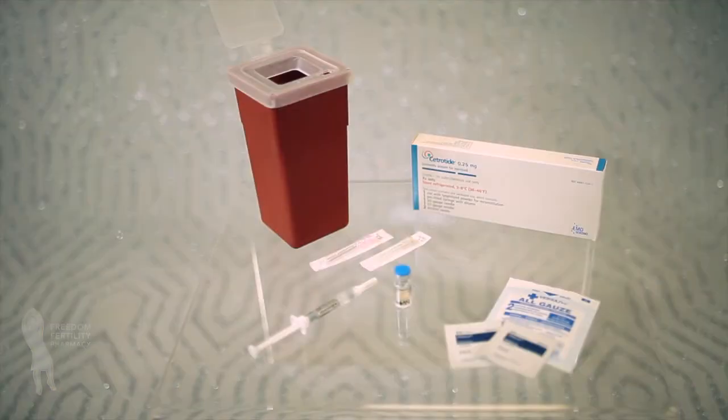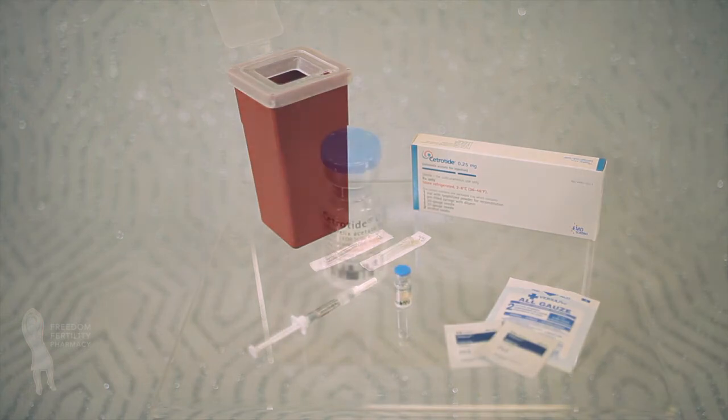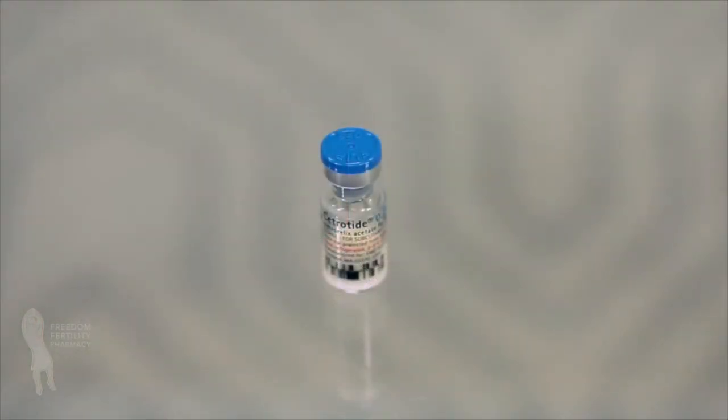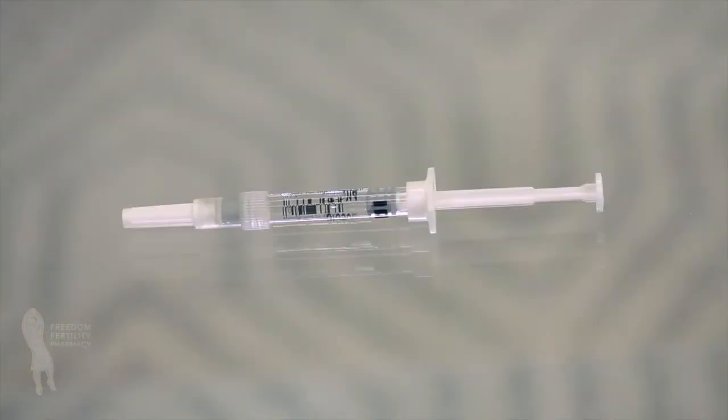Be sure to have all of the following items before you begin. One vial of Cetrotide 0.25 milligram powder. Pre-filled syringe of sterile water for injection USP.